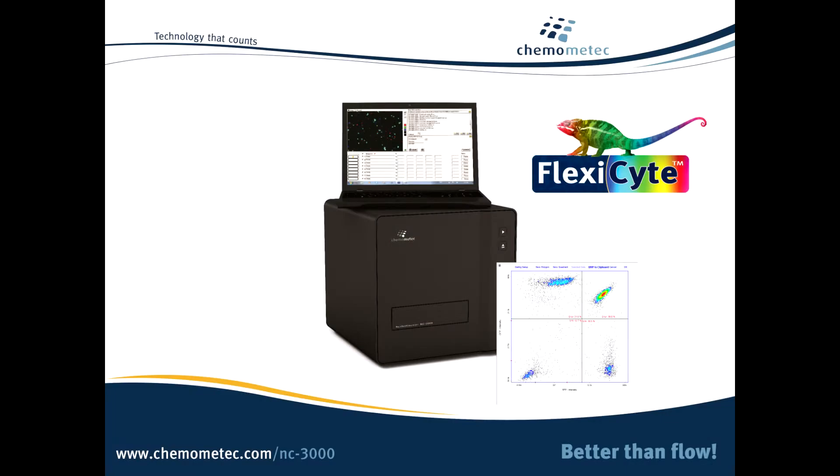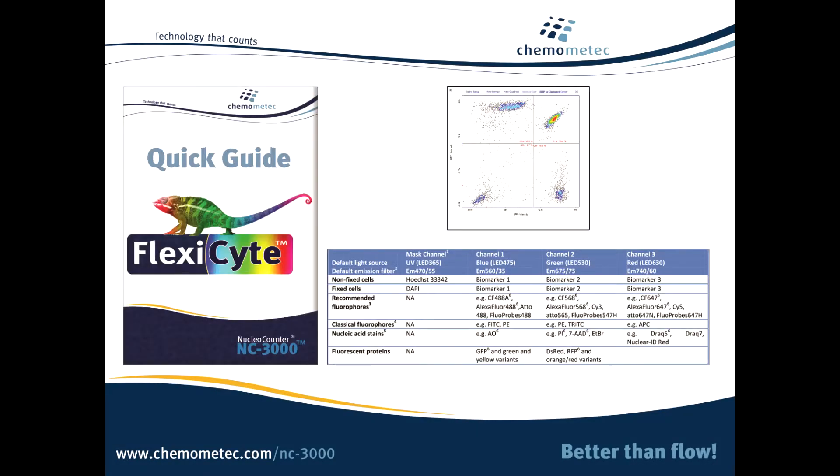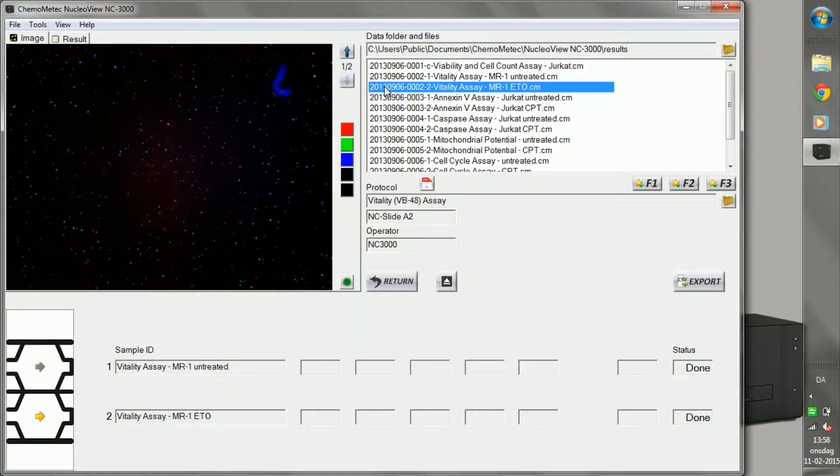FlexiCyte is flexible cytometry that lets you build your own customized assay from the ground up using the antibodies and fluorophores you want.